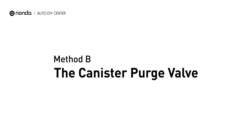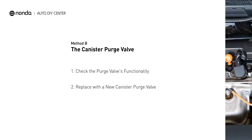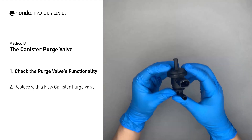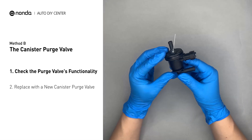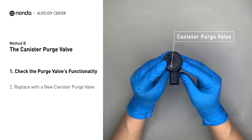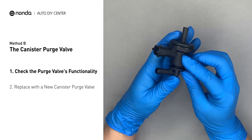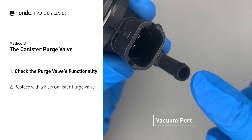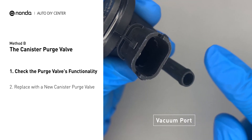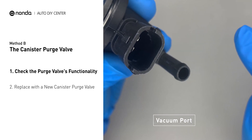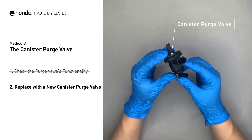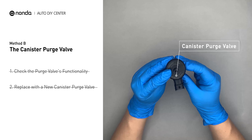Method B: the canister purge valve. The canister purge valve is usually located behind the intake right next to the throttle body. For demonstration purposes, we have removed the canister purge valve prior to filming. But you should locate this component in your car while the engine is still running, and place your finger at the vacuum port to check its functionality. If your finger experiences vacuum suckage, it means the canister purge valve is stuck and needs to be replaced. Simply take the used canister purge valve off and replace it with the correct new one.